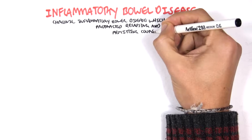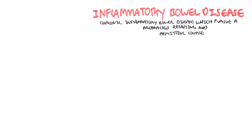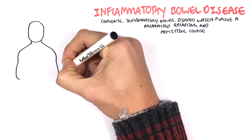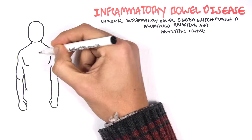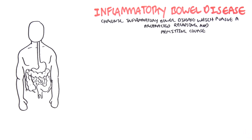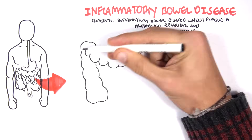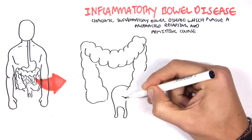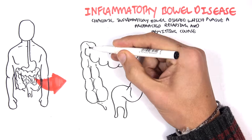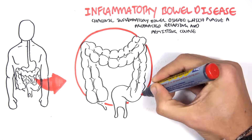There are two types of IBD. IBD typically involves the colon, but of course one of the types of IBD involves the whole GIT.